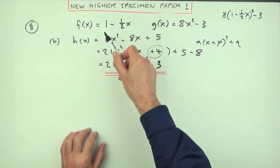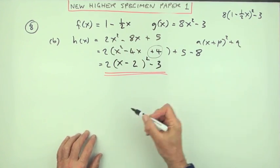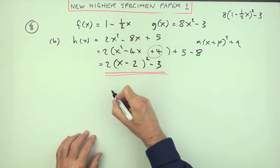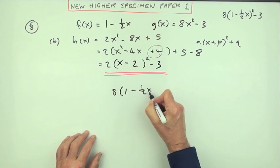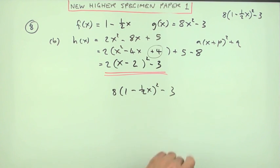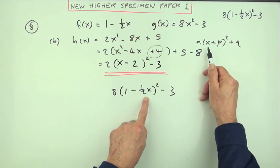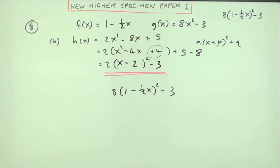But you may have noticed that when you did g of f(x) to begin with, you got this expression before it was expanded. It was in the form of 8 times (1 - ½x)² - 3. That was almost the form of a completed square. Well, the problem was this bit inside didn't look like x plus a number.